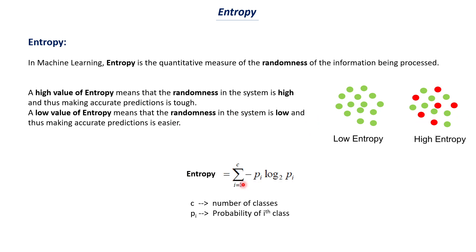The formula for entropy is the summation from i = 1 to C of −P_i × log₂(P_i), where C is the number of classes and P_i is the probability of the i-th class. For example, if out of 8 data points 3 people are placed and 5 are not placed, the probability of placed is 3/8 and not placed is 5/8. We compute that formula for each class and sum them up to get the entropy value. If entropy is high, the decision tree is not working well. If entropy is low, it can clearly separate values and make good predictions. Our goal is to choose the decision tree with the lowest entropy value.